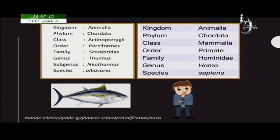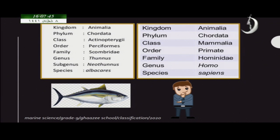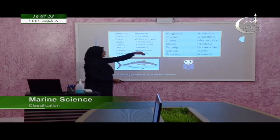Here you can see how organisms are classified — one example is from the marine environment, and the other is a human being. First we look at humans. When you start the classification of a human being, the kingdom is Animalia. All animals including humans come under kingdom Animalia. Then comes the phylum — phylum Chordata.